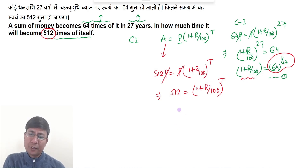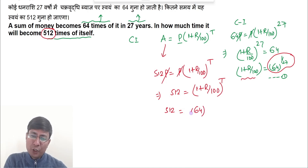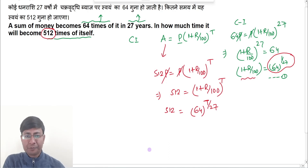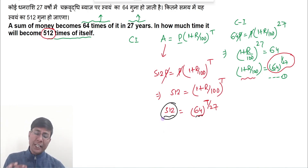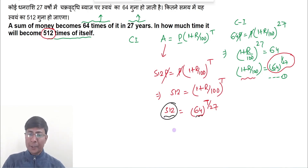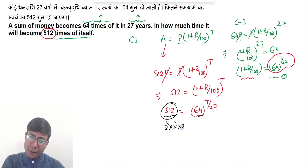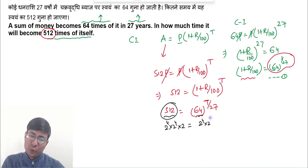Now substitute the known value here. So 512 becomes 64^(T/27). Both sides are multiples of 2, so we break them into powers of 2. 512 = 256 × 2 = 2^4 × 2^4 × 2 = 2^9. And 64 = 2^4 × 2^2 = 2^6, raised to the power T/27.